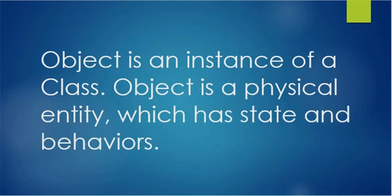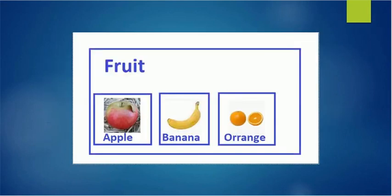An object is an instance of a class. An object is a physical entity in real life that has a state and behaviors. Take a look at this picture — here, fruit is a class, and apple, banana, and orange are objects in the fruit class.